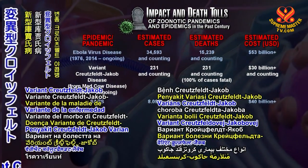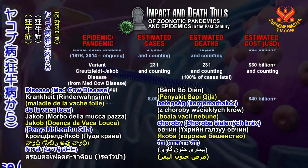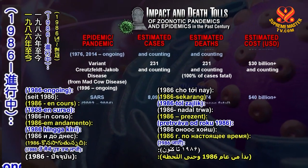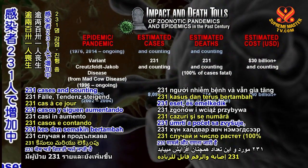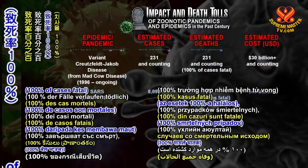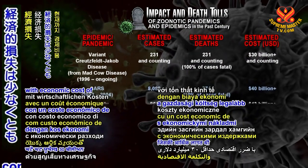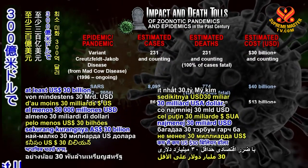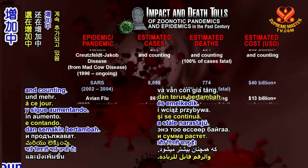Variant Creutzfeldt-Jakob disease (Mad Cow disease), 1986 to ongoing: 231 cases and counting, 100% of cases fatal, with an economic cost of at least 30 billion U.S. dollars and counting.